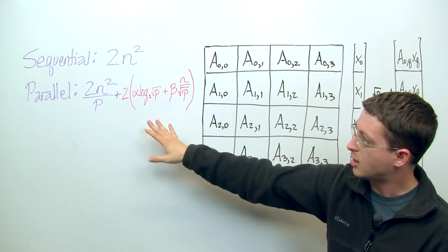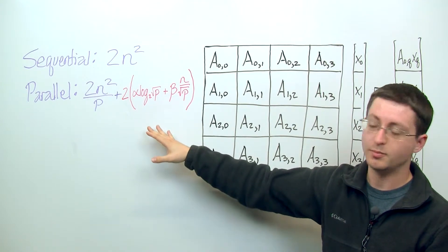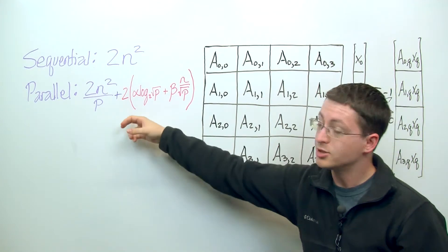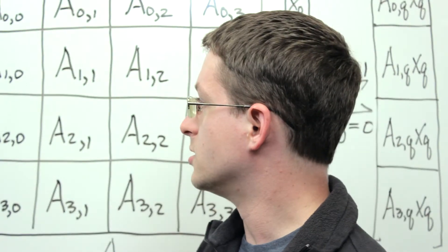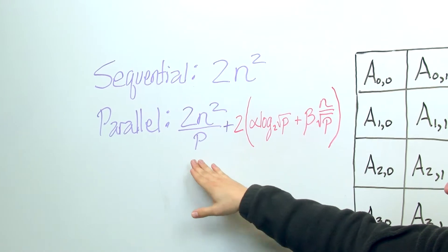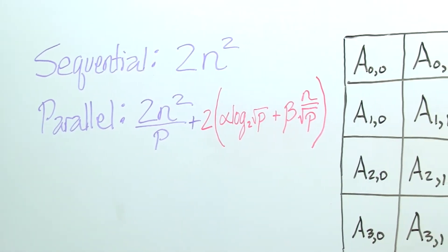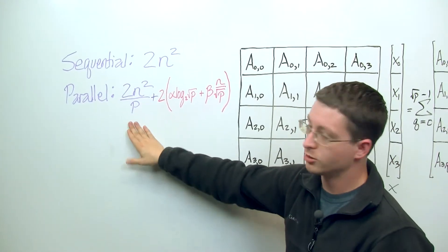And so when you look at the final cost of this parallel algorithm, you see that we could reasonably make use of n-squared processes. So suppose we set p equal to n-squared here, what would happen is that this initial computation phase of, say, a0,0 times x-sub-0 would require order of 1 work.